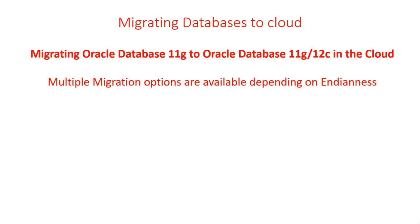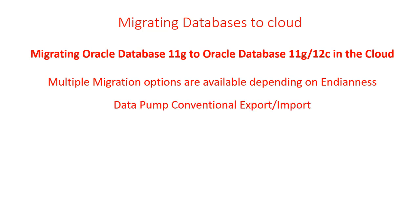Whatever migration option we choose depends on what endianness your system is, so read up on that to get an idea of what it means. It's basically a reflection of how early computer architecture was first designed. The first option is a Data Pump conventional export and import.